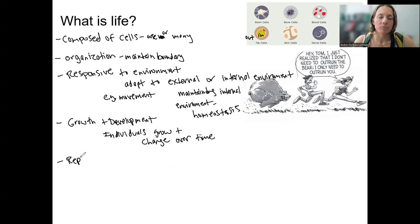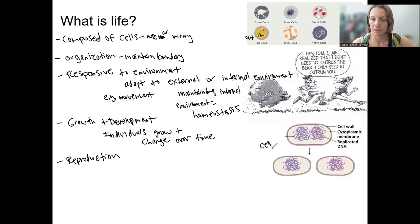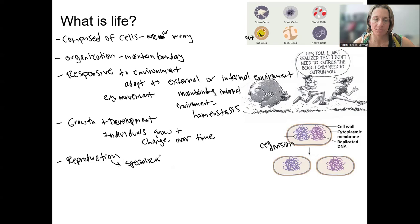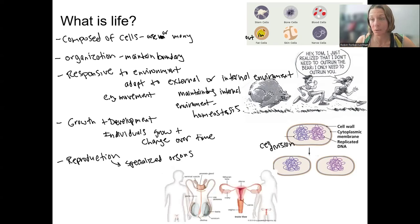Then there's reproduction. In some organisms this is simple cell division, like mitosis. When we're talking about humans, this is what occurs for us to grow and develop — when we grow larger, we go through mitosis as one of the processes. In humans, we have specialized reproductive organs, and these allow us to reproduce.